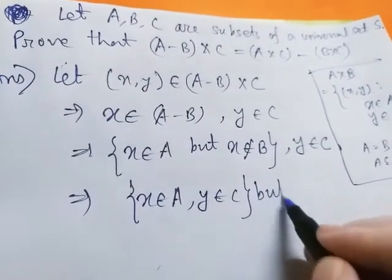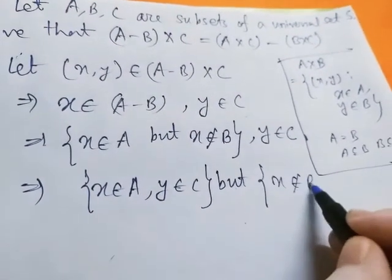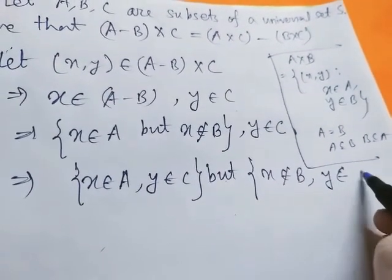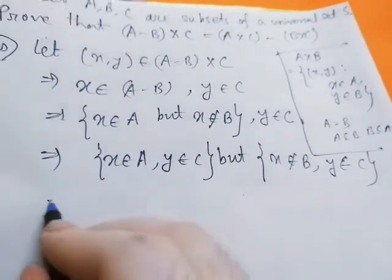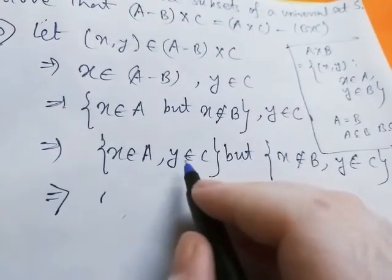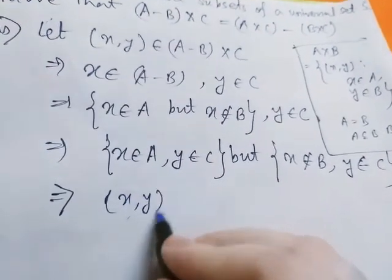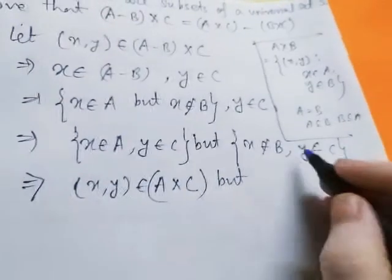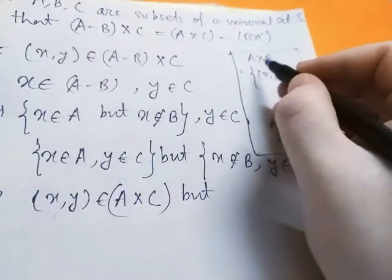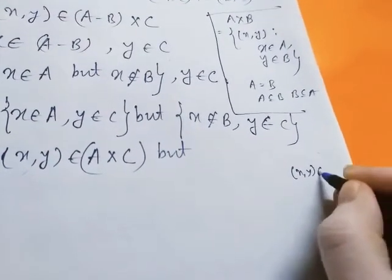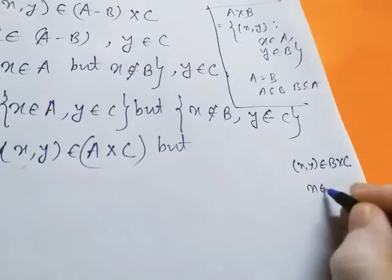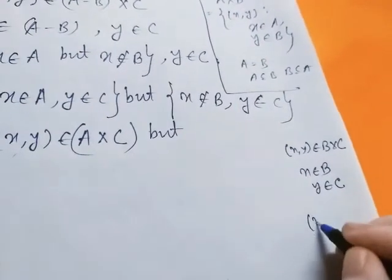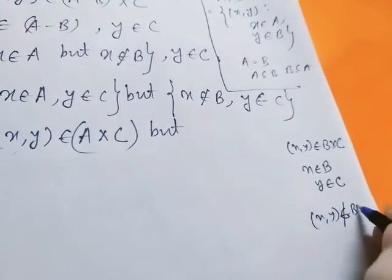This implies we can write: x belongs to A, y belongs to C, but x does not belong to B. Since y belongs to C always holds, y belongs to C. This implies x belongs to A and y belongs to C, so obviously ordered pair (x, y) belongs to A cross C. But x does not belong to B. If ordered pair (x, y) belonged to B cross C, then x must belong to B — but x does not belong to B, so ordered pair (x, y) does not belong to B cross C.